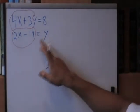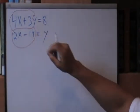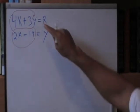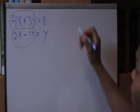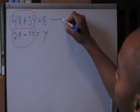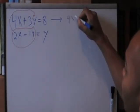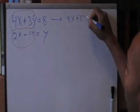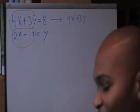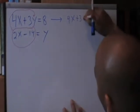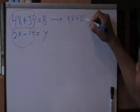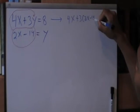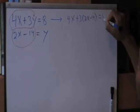If y equals 2x minus 14, we can replace the y in equation 1 with 2x minus 14. So, when I rewrite this, this equation is now going to become 4x plus 3 times (2x minus 14). And that all equals 8.